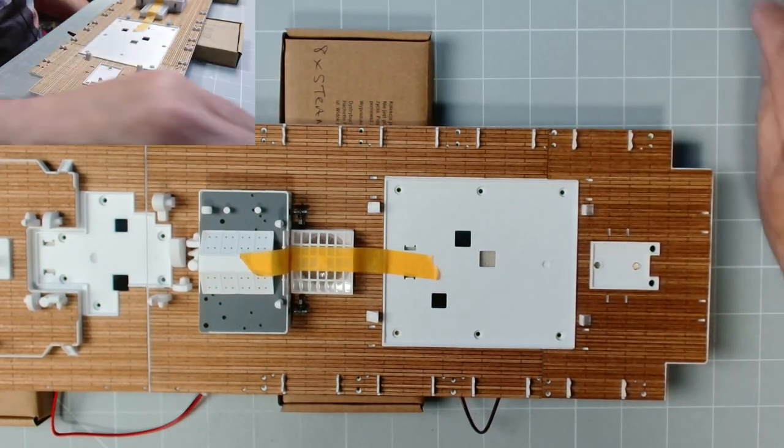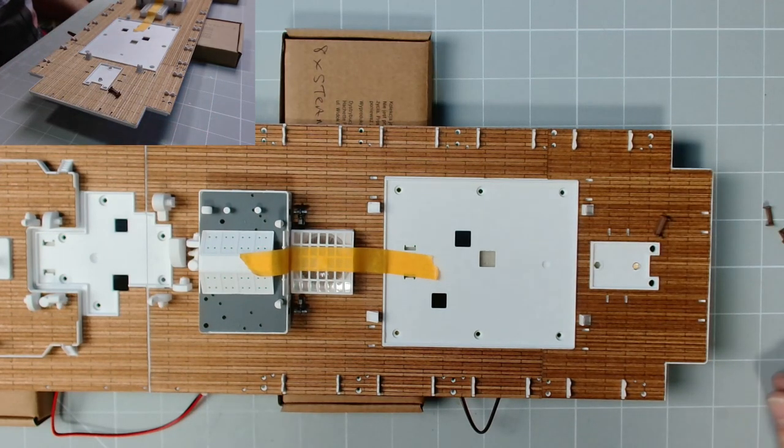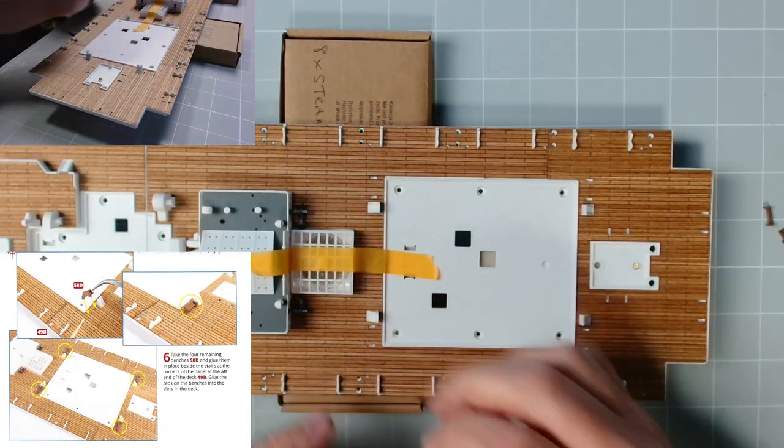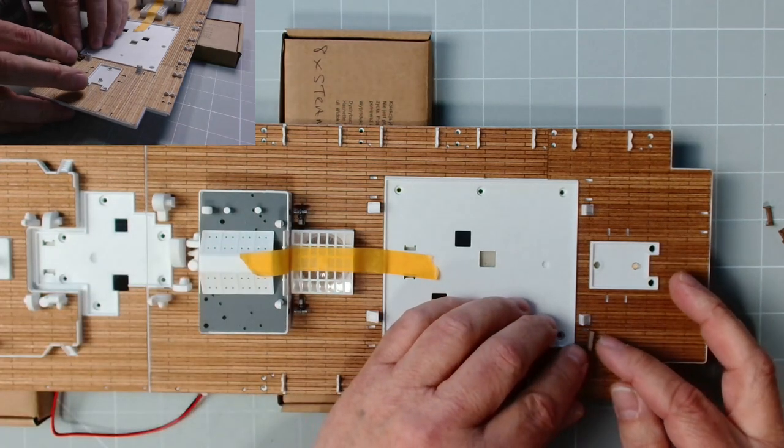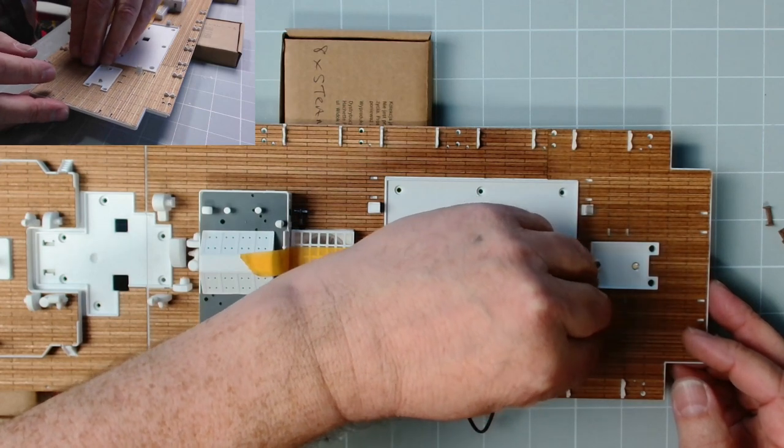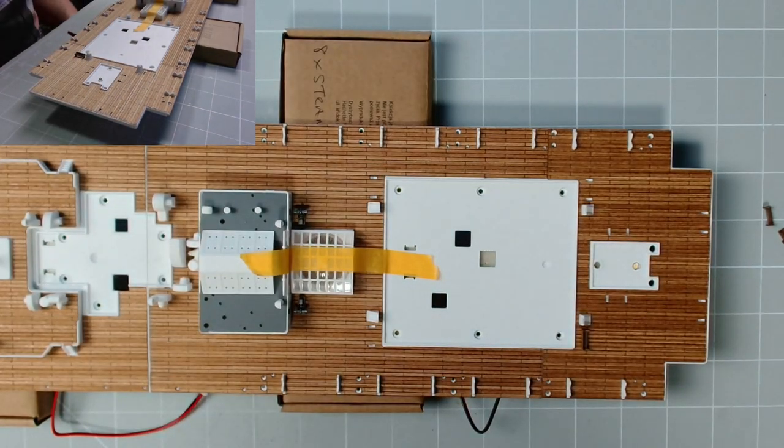Okay guys, there we go. That is the decking in place, looks lovely jubbly. Nice and flat indeed. Excellent. All we need to do now is to fit these four benches into place here, here, here and here. Now these are probably going to need glue as always.